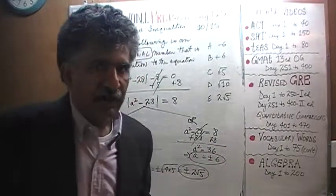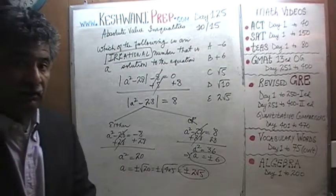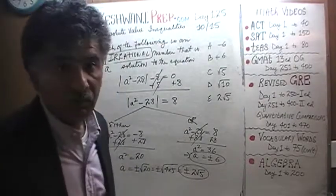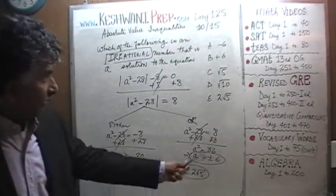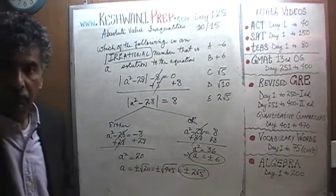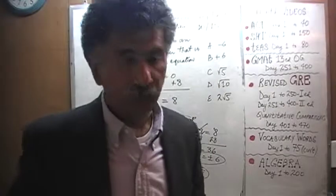What is even more frightening is that today is our very lucky day. We were looking for one right answer. We have found, in fact, 3. Positive 6, negative 6, and 2 root 5. There are 3 right answers here. What do we do?